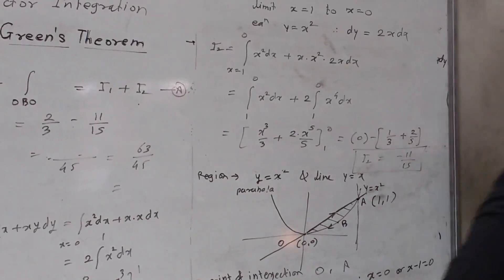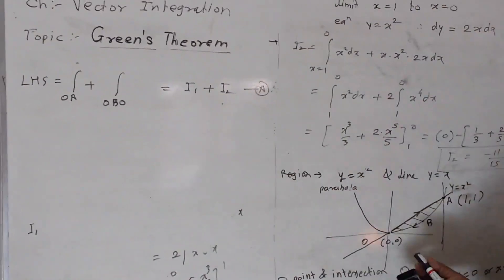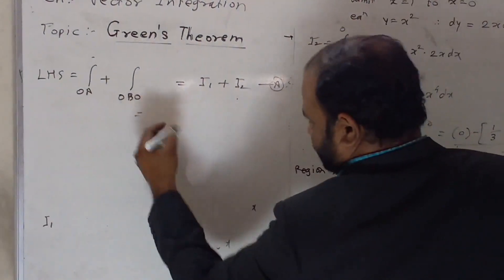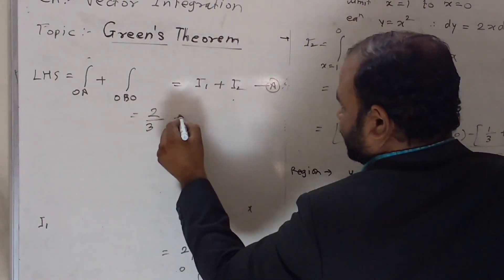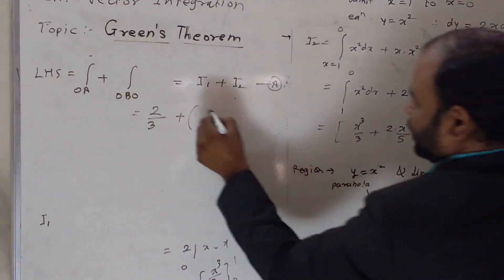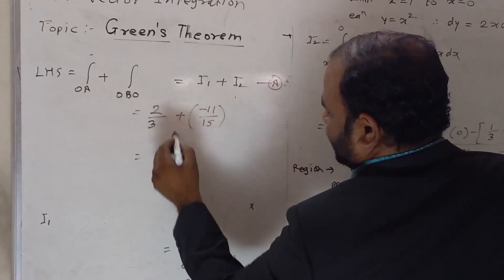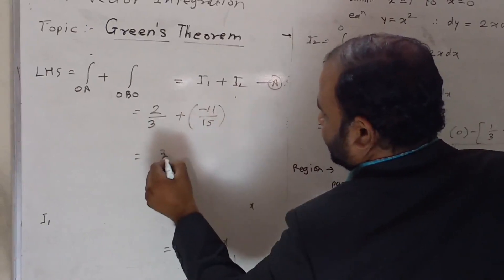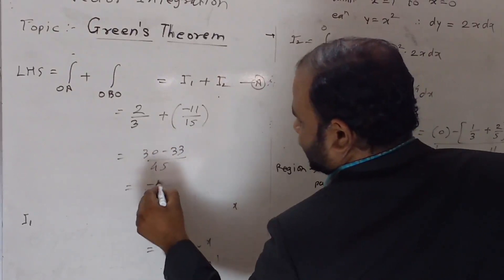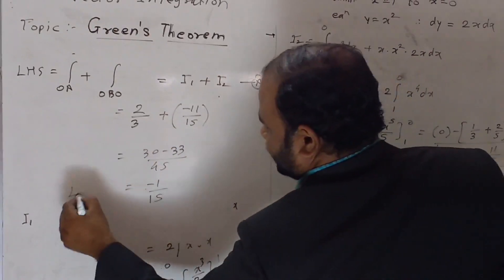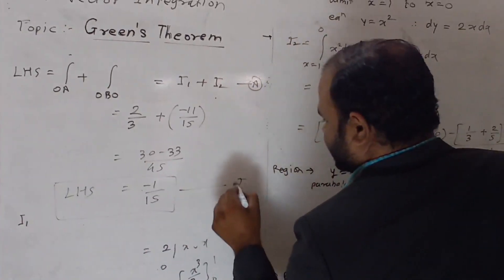Green's Theorem LHS is I₁ + I₂. So LHS = 2/3 + (−11/15) = 10/15 − 11/15 = −1/15. The value of LHS is −1/15.